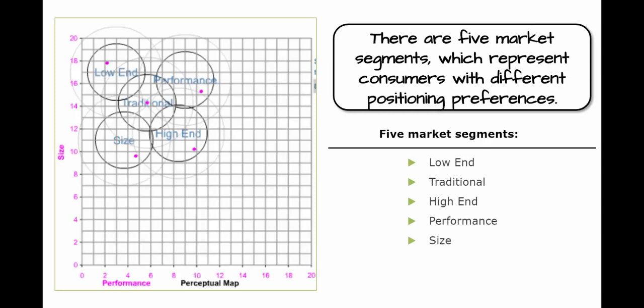In the simulation, there are five market segments representing consumers with different positioning preferences: the low-end, traditional, high-end, performance, and size market segments. Different market segments prefer distinctly positioned products. For example, the low-end market segment prefers products positioned in the upper left of the perceptual map — large in size and low in performance. The high-end market segment, on the other hand, prefers products in the lower right corner — small in size and high in performance.